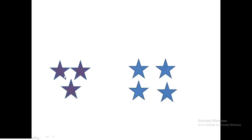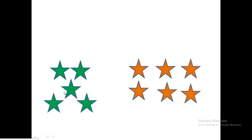Let's count the purple stars: one, two, three. Therefore there are three stars. Let's keep counting: one, two, three, four. So here we have four blue stars. Let's count the green stars: one, two, three, four, five. We have five green stars. Let's count the orange stars: one, two, three, four, five, six. Six orange stars.